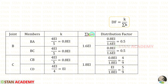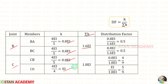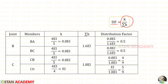Now let us find Sigma K. In joint B we have found two stiffness values; adding both gives 1.6EI. In joint C we also have two stiffness values; adding both gives 1.8EI. Now we can find the distribution factor using the formula K upon Sigma K. Using the K and Sigma K values we have found, we can calculate all distribution factors.